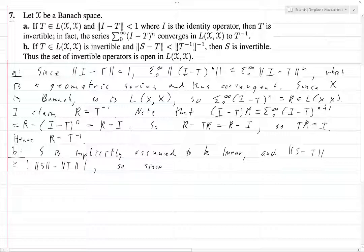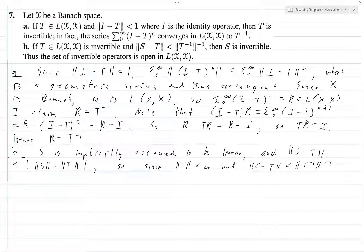Use our good old friend the reverse triangle inequality. Normally norm of S minus norm of T. So since T is finite and S minus T, we know, is less than norm of T inverse inverse. But we know that T is in bounded linear functionals and T inverse is in bounded linear functionals. So T inverse is some finite number, and so its inverse is some finite number.